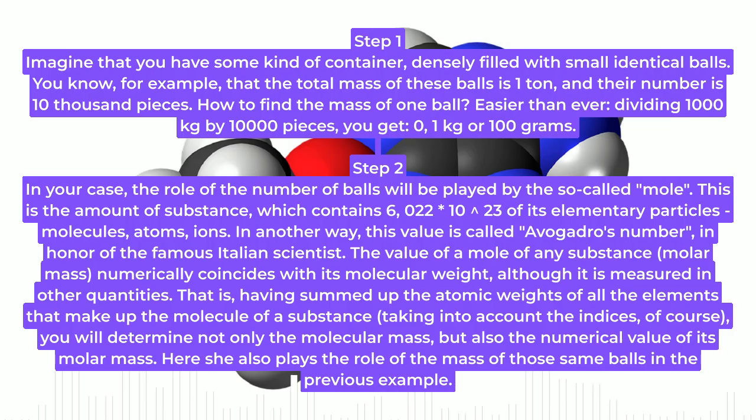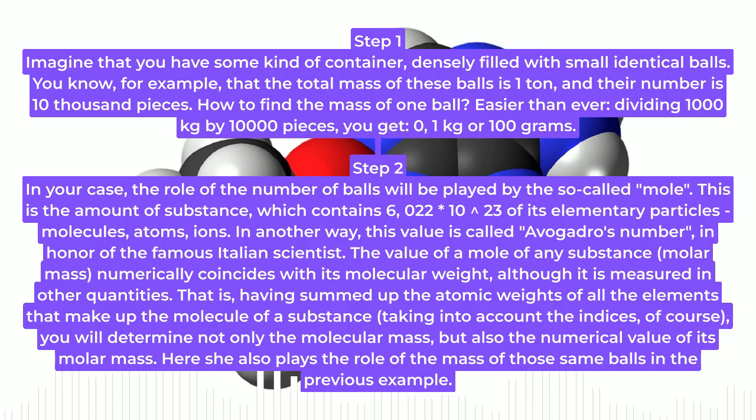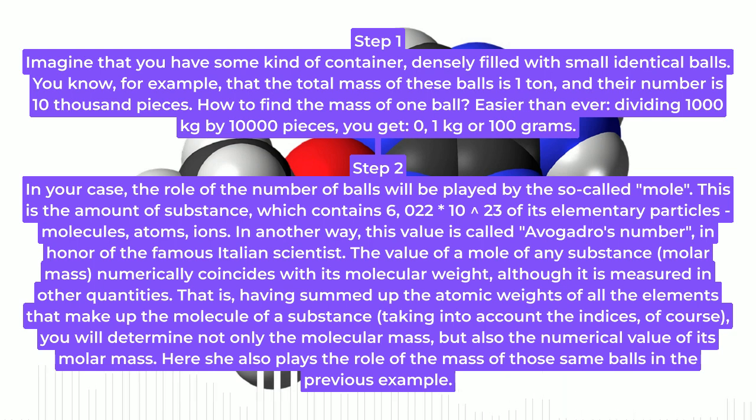Instructions. Step 1: Imagine that you have some kind of container densely filled with small identical balls. You know, for example, that the total mass of these balls is 1 ton, and their number is 10,000 pieces. How to find the mass of one ball? Easier than ever, dividing 1,000 kilograms by 10,000 pieces, you get 0.1 kilogram or 100 grams.